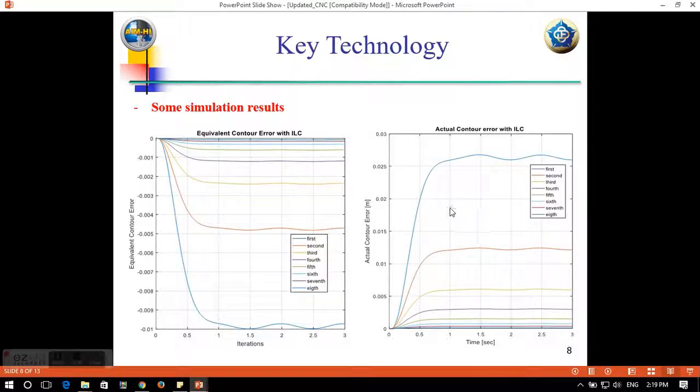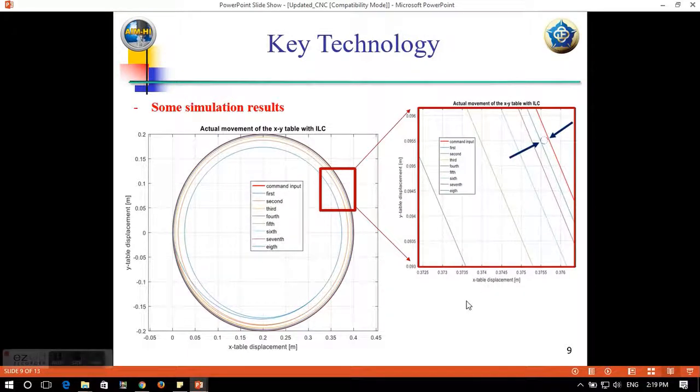And for the second figure, we can see that equivalently, the actual control error model always decreases after several learning times. And for the actual movement of the XY table, you can see the right one. The right one is a command. We want to move the table to follow the circular path.